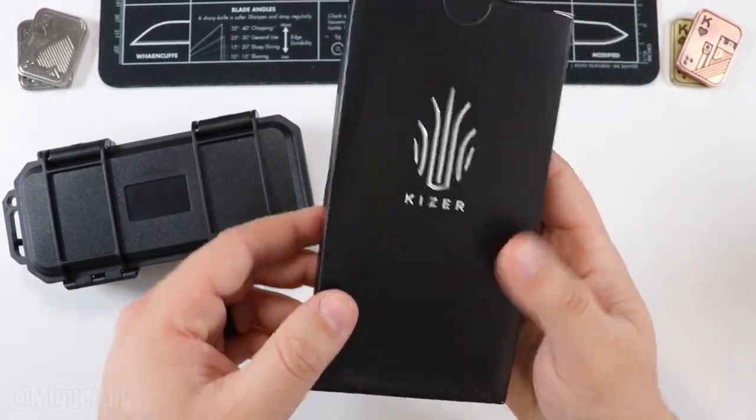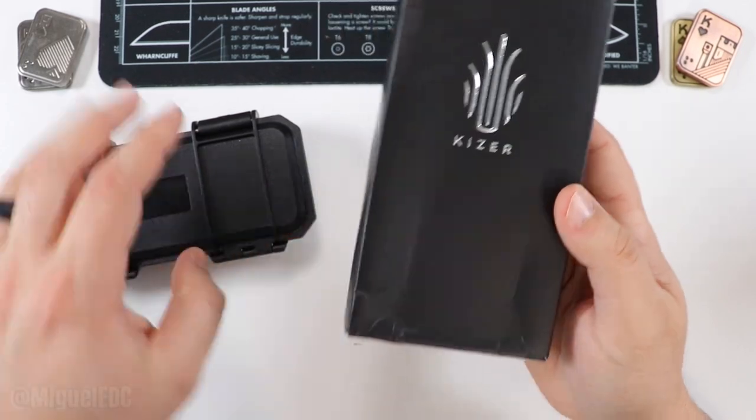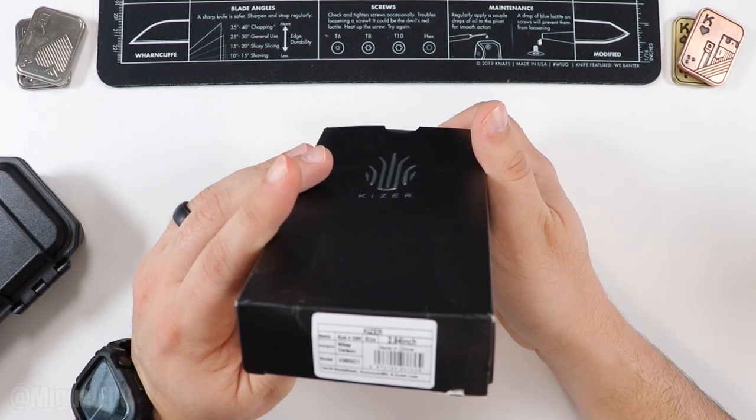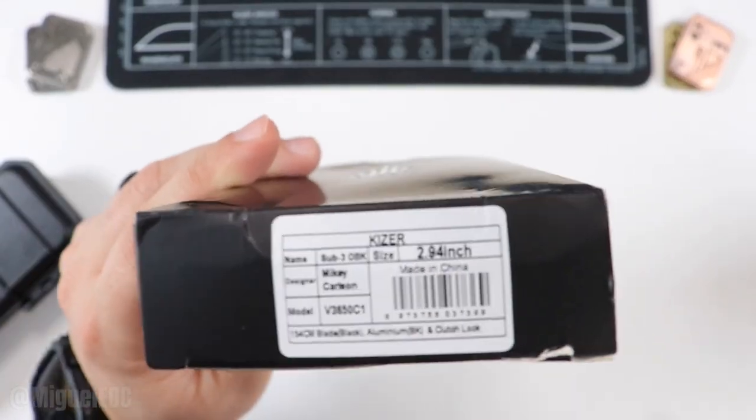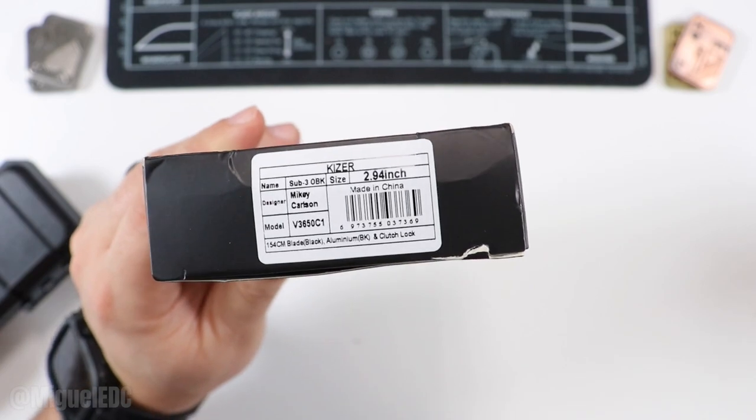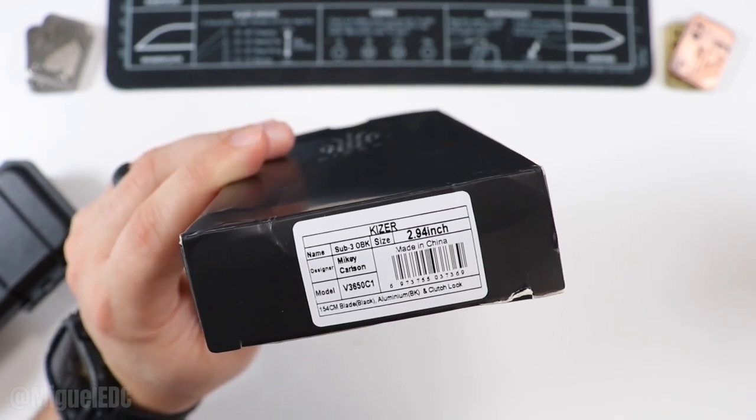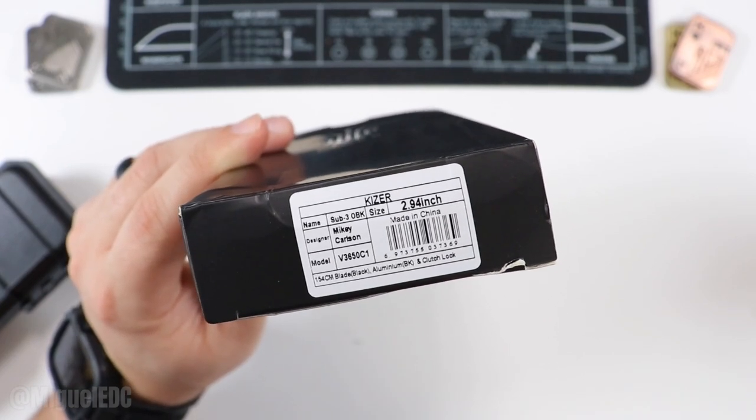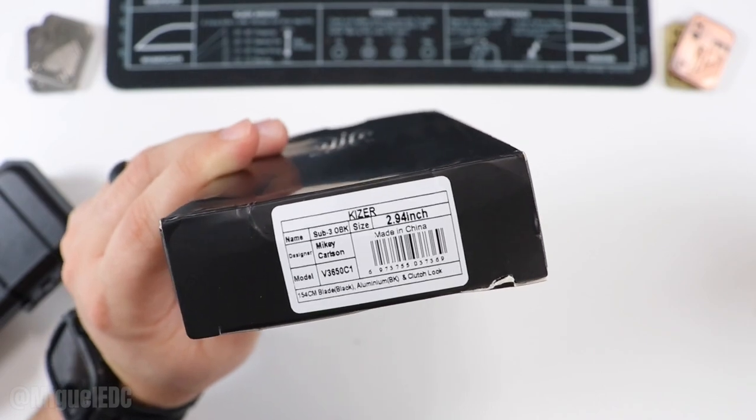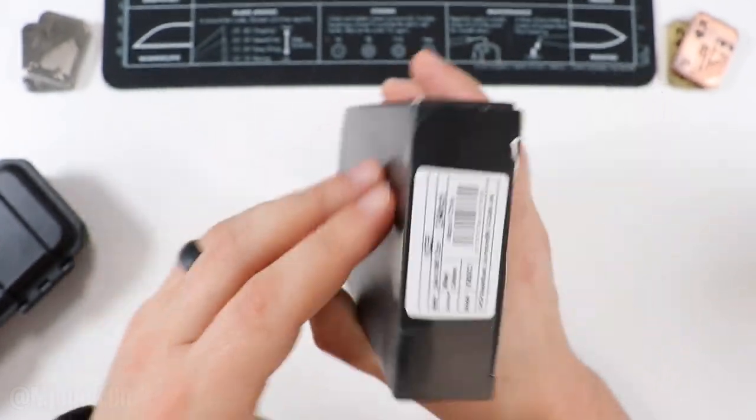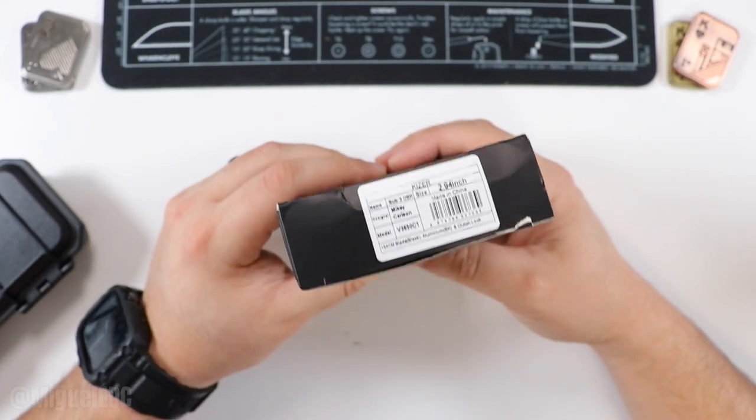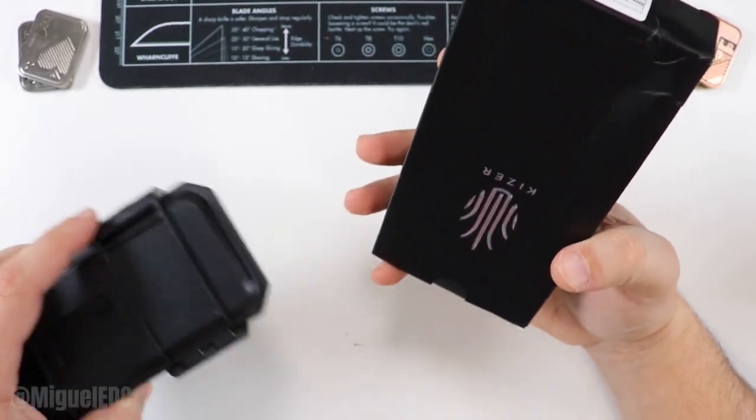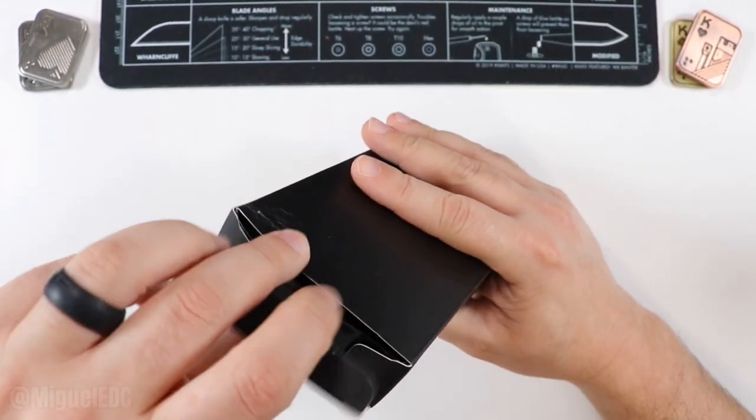We got a little bit of damage to the box here. This one is the Kaiser Sub 3 OBK. This is a treat because this one just came out very recently at the beginning of February, so it's a fairly new knife. It has a 154CM blade in black with aluminum handles and the Clutch Lock, which is Kaiser's version of the crossbar lock. It offers good ability to adjust the pressure and tension on those omega springs.